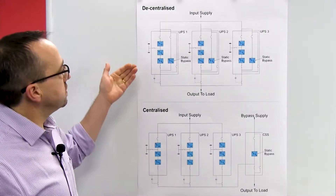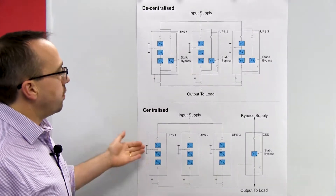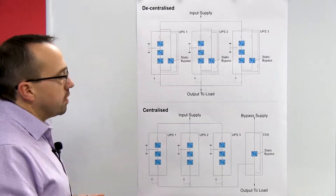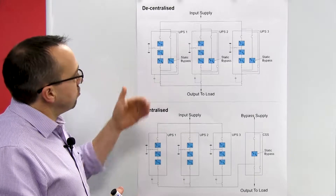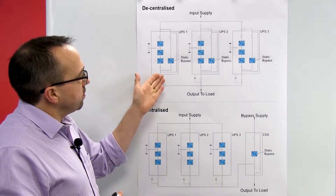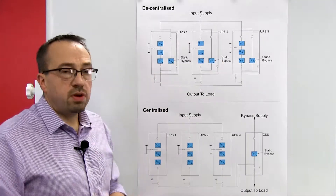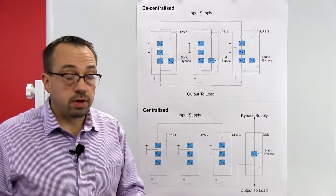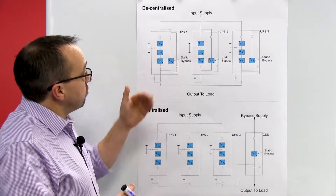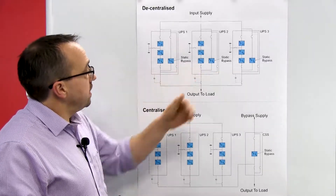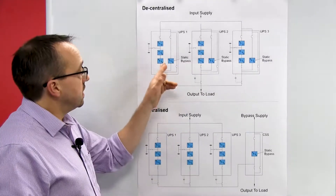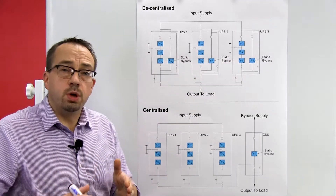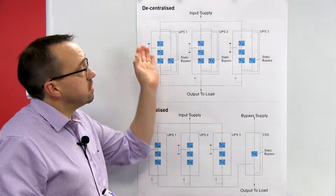On the board here we have two systems: the decentralized system and the centralized system. The main difference is the location of the static bypass. In the decentralized system we have three UPS systems — one, two and three — and you can use either more or less. Inside each UPS there is a dedicated static bypass per UPS, so the bypasses are split across the UPS modules and hence they are decentralized.